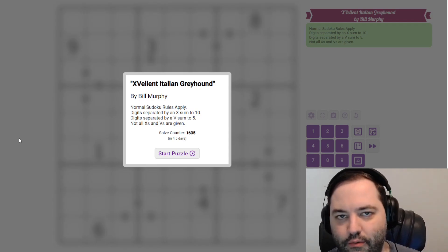Hi everyone, this is the guest walkthrough for June 25th. I'm Philip Newman. Today I'm solving X-Valent Italian Greyhound. This is by Bill Murphy and it is an X-V pairs Sudoku.